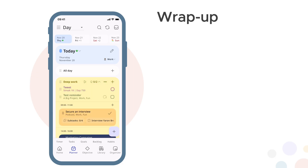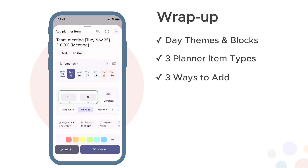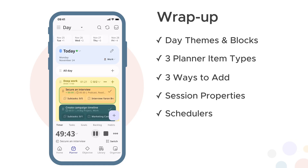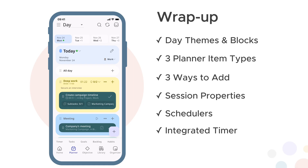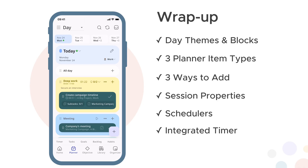Wrap up. You now know how to plan your day in Journalit. You learned how day themes and time blocks give you structure without rigidity. You saw the three types of planner items — sessions, reminders and pinned items — and three ways to add them. You explored calendar session properties, how schedulers create unique instances for flexible repetition, the integrated Pomodoro timer, and all four planning views. Now practice: plan tomorrow in Journalit, add a few sessions, set up a time block, try the timer. The best way to learn is to use it. For more details, check out the written user guide — links are in the description. Next up: tasks and goals, where you'll learn how to manage your objectives and connect them to your planner.